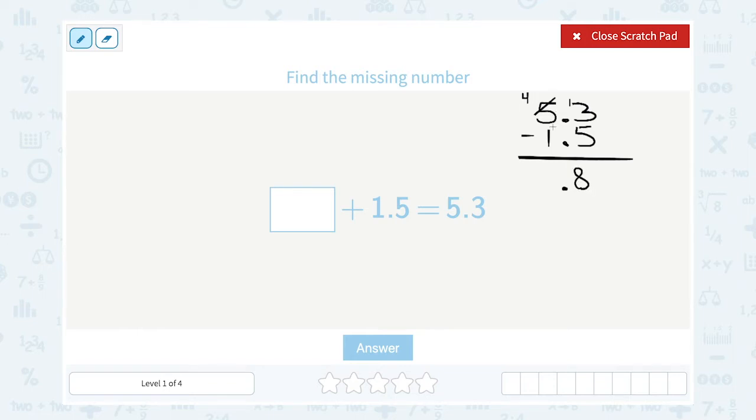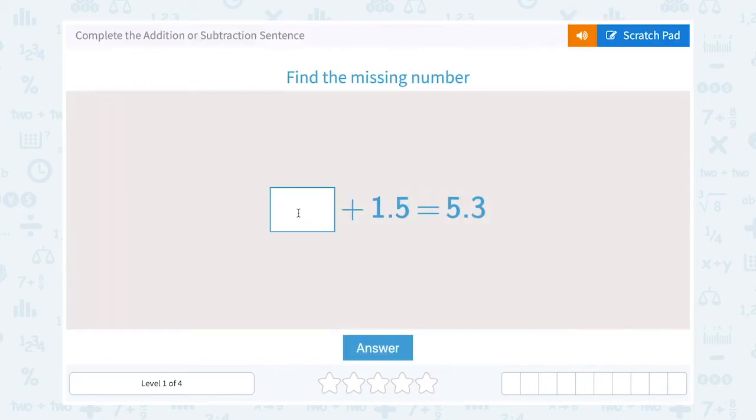Okay, so I have 4 minus 1, or 3, which gives me 3.8. So this means 3.8 plus 1.5 would add up to or equal 5.3. So I'm going to fill that in as my missing number, 3.8.